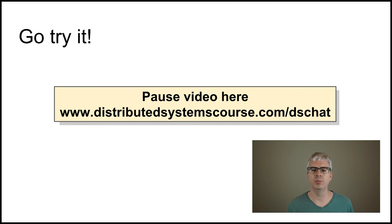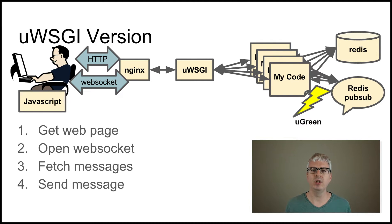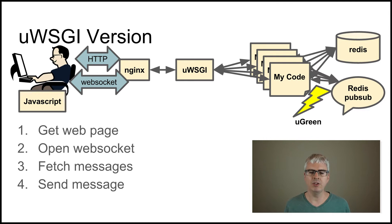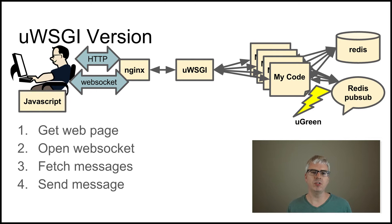Welcome back. Let's talk about how the uWSGI version of our chat application works. I'm going to go through one request at a time and explain how the various components of our server respond to those requests. The first thing that happens when a user goes to our chat application's web page is it fetches the page from the web server — I happen to be running an nginx web server on a virtual machine in the cloud, though you can run it anywhere you want. The nginx web server responds with the HTML, JavaScript, and favicon of the web page. The browser then starts executing the JavaScript, and the first thing the application does is open a persistent connection back to the web server using the WebSocket protocol.